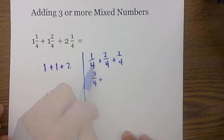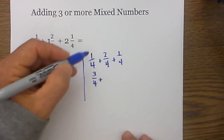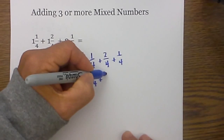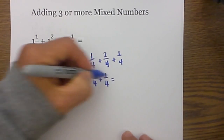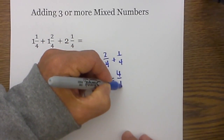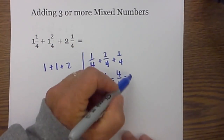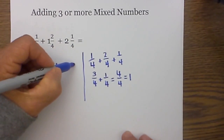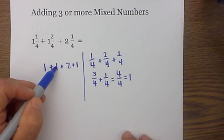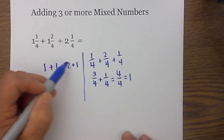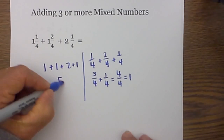So now I have one fourth plus two fourths is equal to three fourths, plus one fourth. When I add that together that gives me four over four which is equal to one. So I will move the one to the other side, and so I now have one plus one which is two, plus two which is four, plus one which is five.